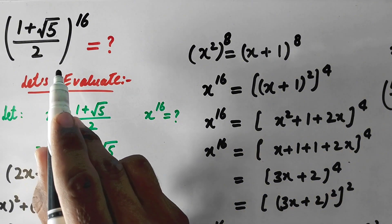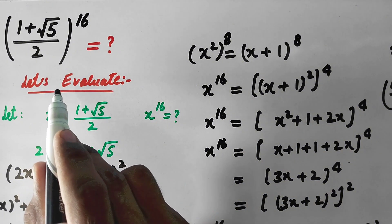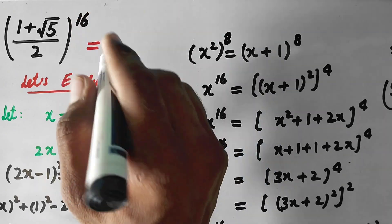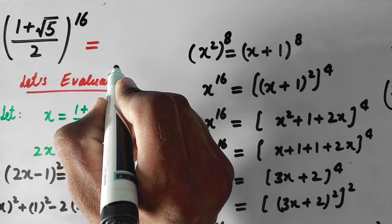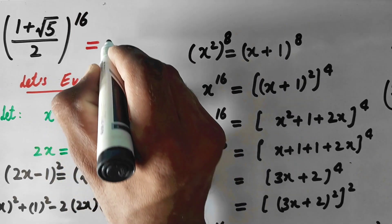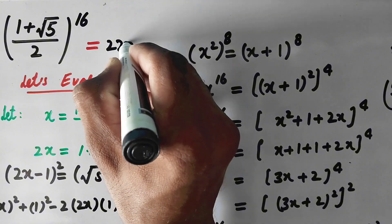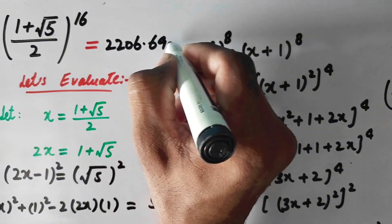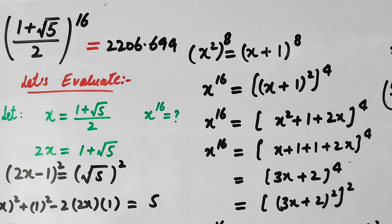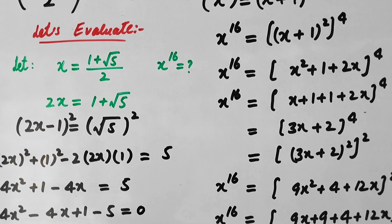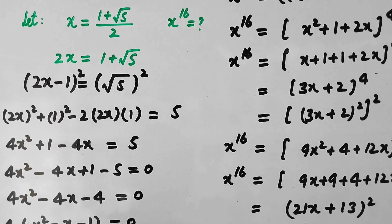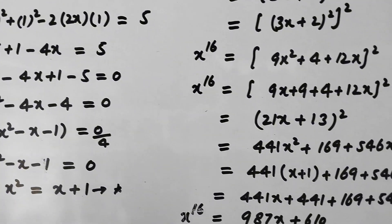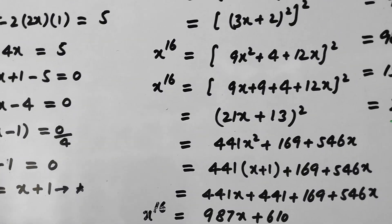And that is our final simplified answer. So (1 plus square root of 5) over 2, whole to the power 16, is equal to approximately 2206.966. I hope you liked the video. Please subscribe to my channel for more videos. Thanks for watching, take care, bye.